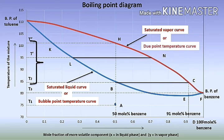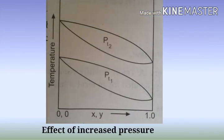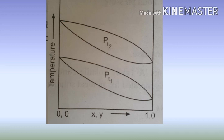In the boiling point diagram, the looped curve between the bubble point curve and the dew point curve is obtained at a specific constant total pressure. If the total pressure of the system increases — say from Pt1 to Pt2 — then the spread between the bubble point curve and the dew point curve decreases. Hence, the separability by distillation becomes less effective at high pressure.